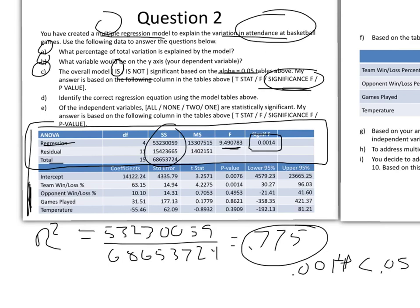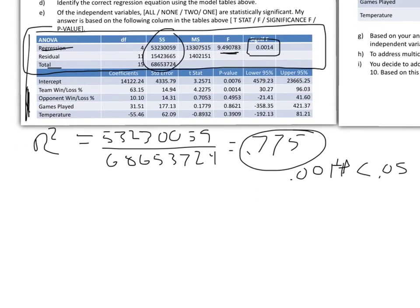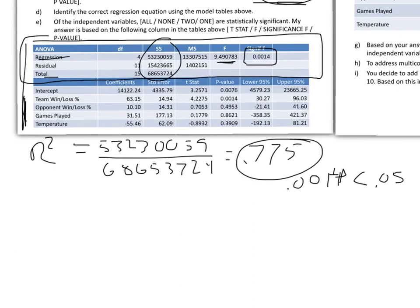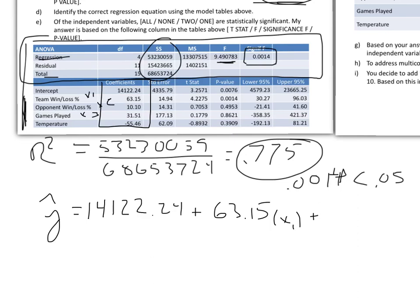Now I'm going to bump this down a little bit so we can do the rest of the problems. Identify the correct regression equation in the model. That is y-hat is going to be equal to, and we get this right out of the coefficients, this column right here. We're going to have 14122.24, that's where it crosses zero, plus 63.15 times the team win. We'll say that's variable one here. That's the easiest way to do it on this screen. I'll label them right here: x1, x2 is opponent win-loss, x3 is games played, and x4 is temperature.